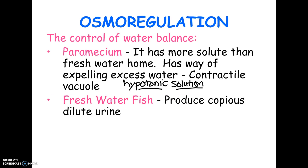Freshwater fish don't have vacuoles, but they're bathed in fresh water — fresh water's flowing over their gills. The way they solve the problem is they basically make lots and lots of urine — actually they make ammonia, which is a highly toxic waste product. We make ammonia too, but because it's so toxic, our cells use energy to convert the ammonia into urea, which is less toxic. Because fish live in water, they just pee all the time and can flush out the toxic ammonia without having to waste energy converting it to something else.